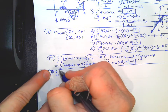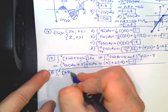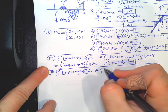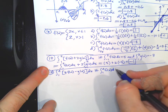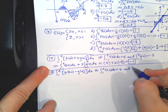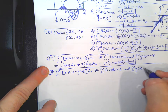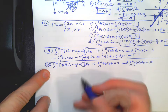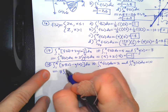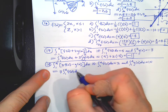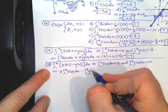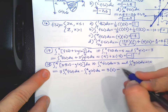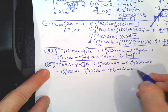Problem 18: find the integral from 1 to 4 of [3f(x) - g(x)] dx, given that the integral from 1 to 4 of f(x) dx equals 2 and the integral from 1 to 4 of g(x) dx equals 10. Break it up: 3 times the integral of f minus the integral of g. That's 3(2) - 10 = 6 - 10 = negative four.